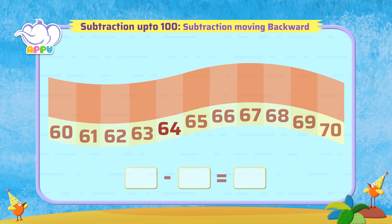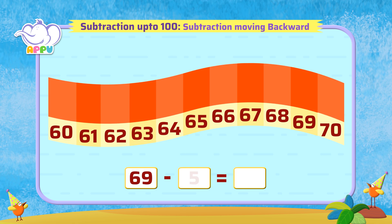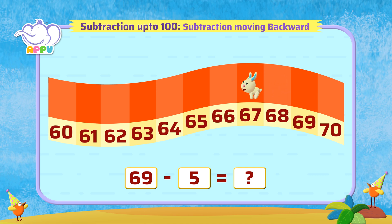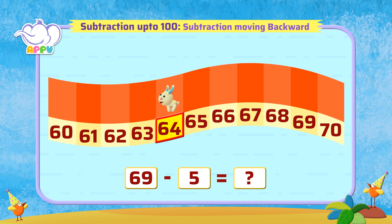What is 69 minus 5? Let's count backwards by 5: 68, 67, 66, 65, 64. The answer is 64. Super!